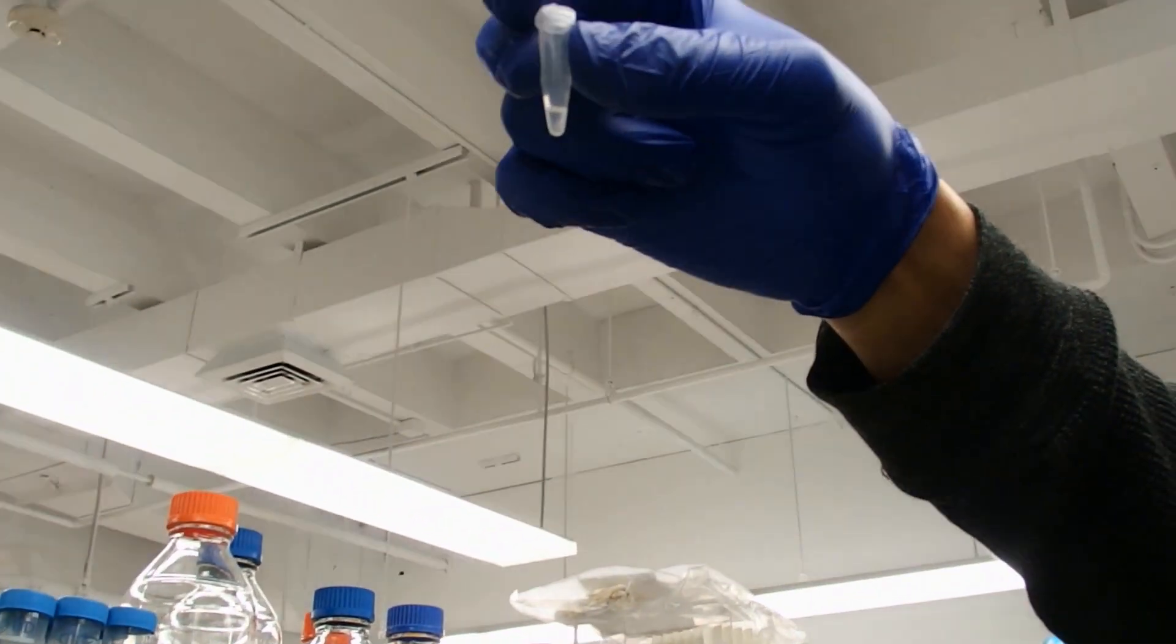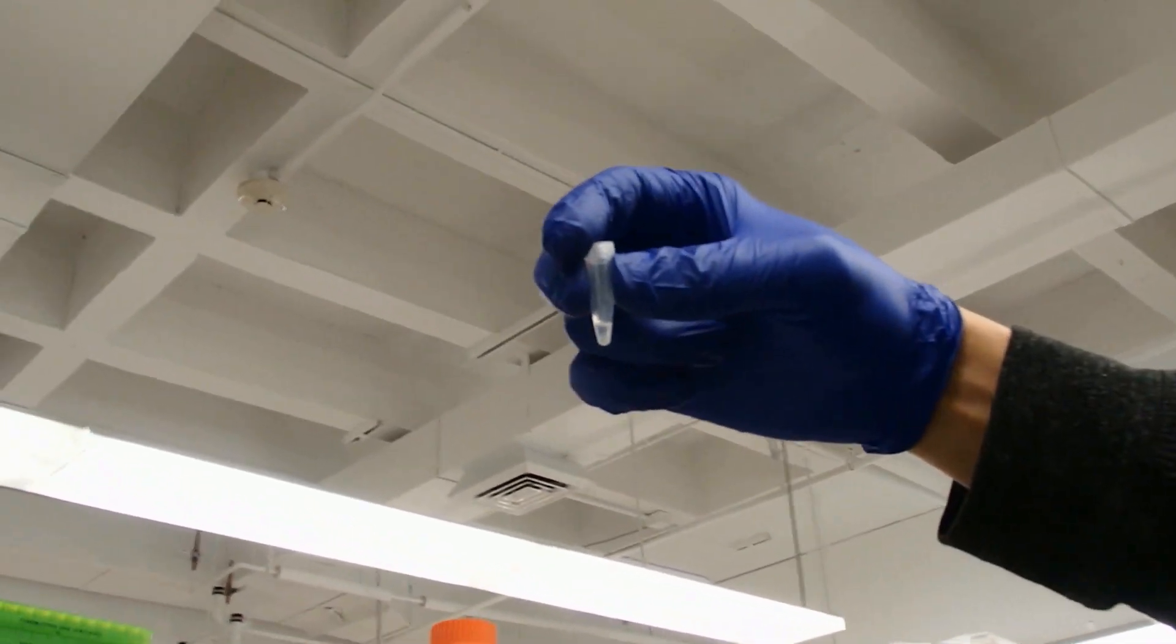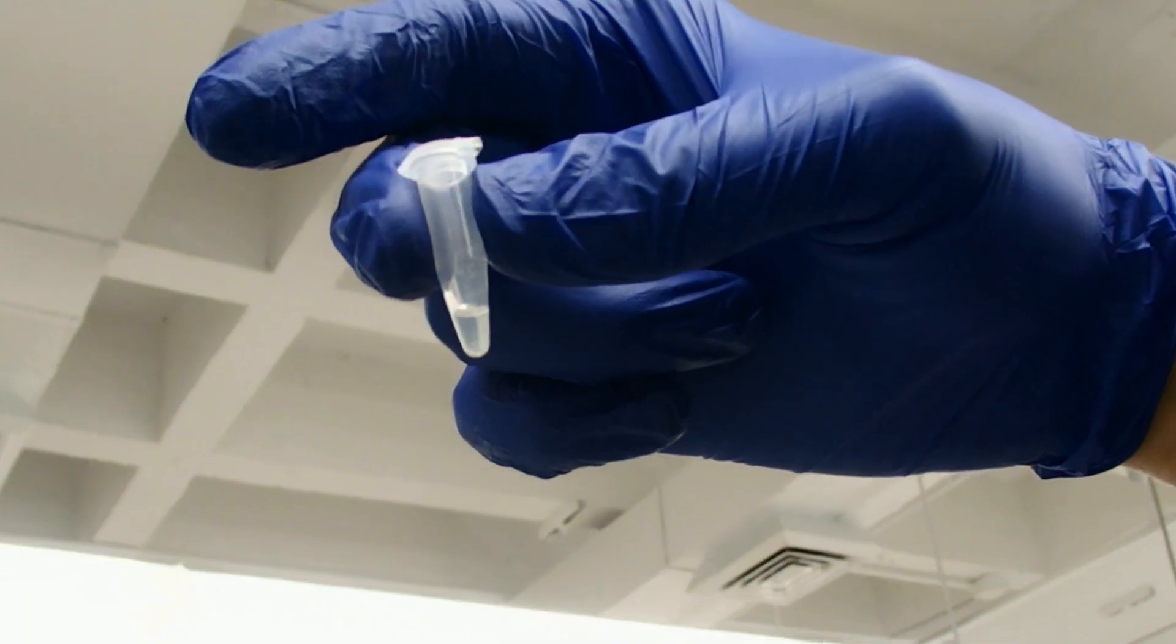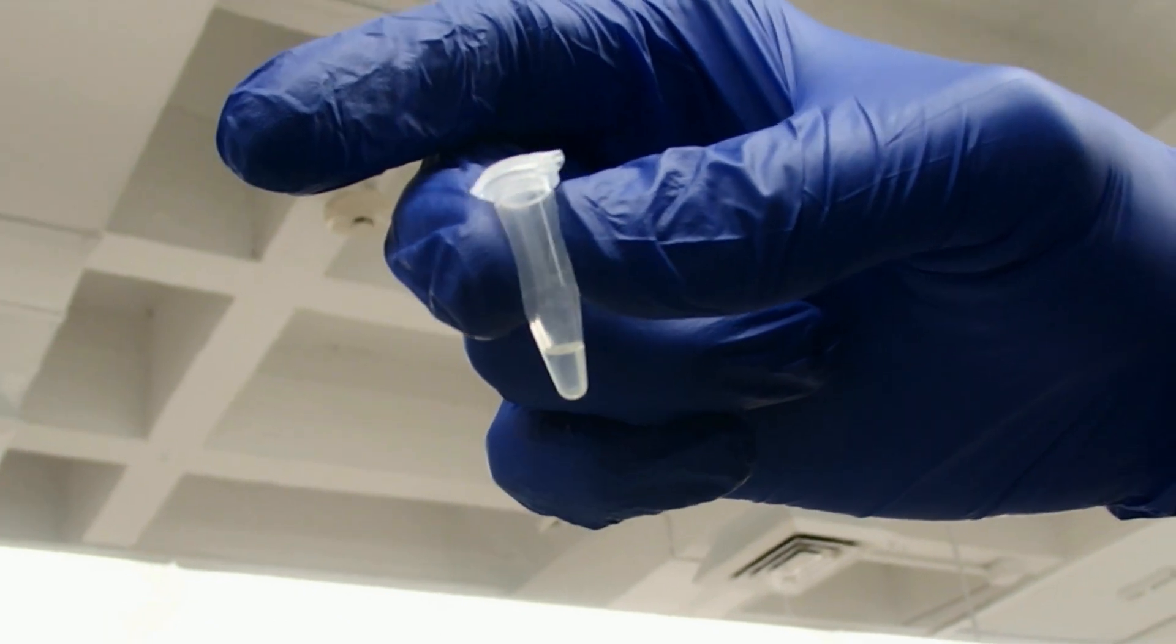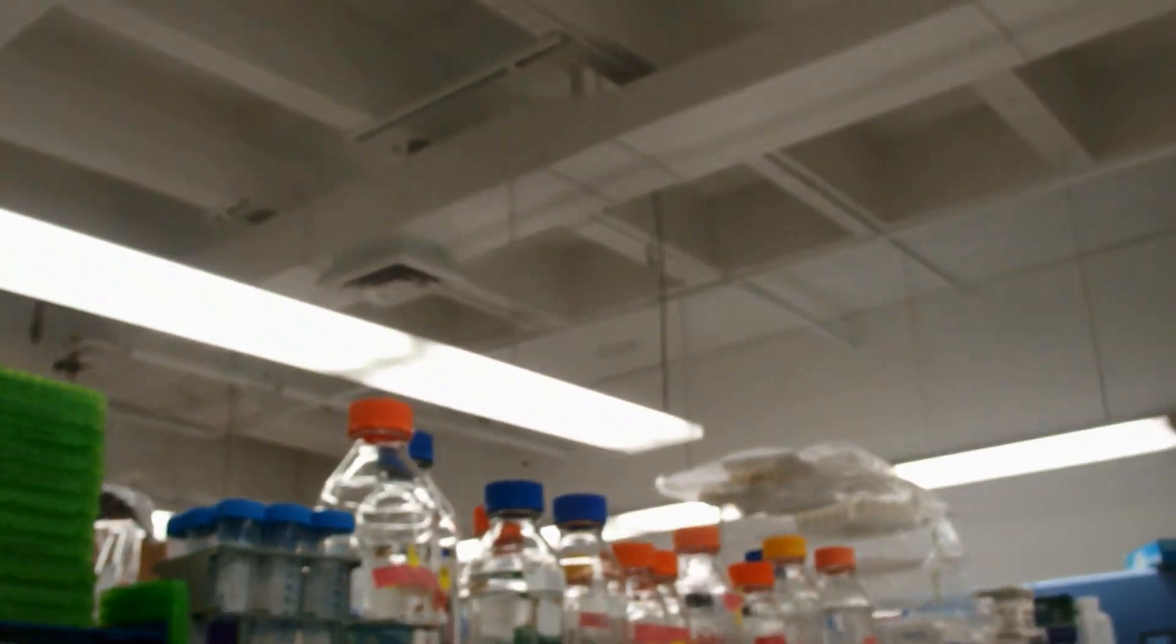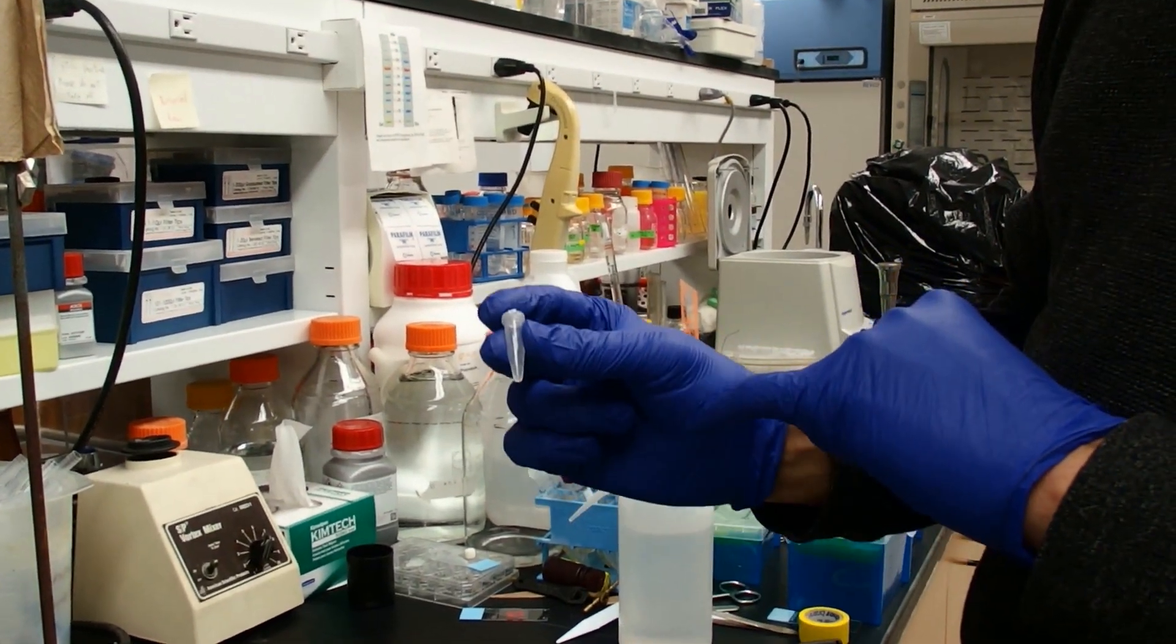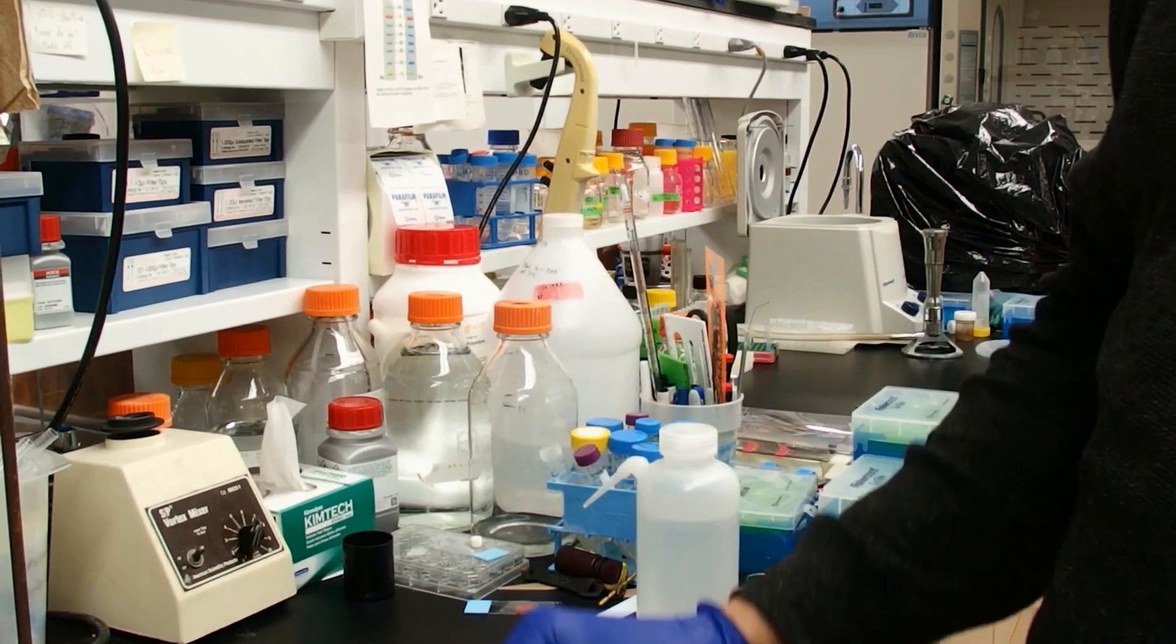If you hold it up to the light and rotate your tube, you'll probably be able to see it. So I can see it in my eyes right here. I'm going to try to hold it up to the light. You know what side of the tube the pellet is on. I always put the hinge to the outside of the centrifuge, so I know the pellet needs to be on that side.